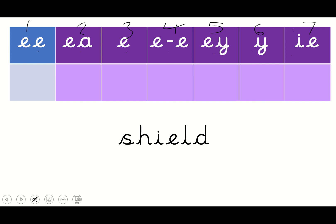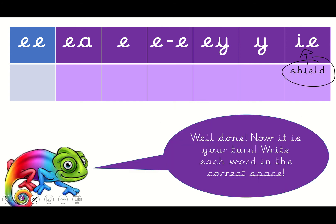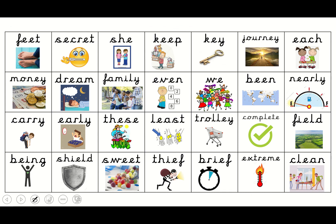Right then, let's look at this word here. Let's have a little blend, shall we? So what's this sound? Shh. Well done. What's this? Yeah, it's the E sound, isn't it? So we've got 'sh' — I-E-L-D — shield. So where does it go? Which E column does it go in? Well done — it goes there because it has the I-E. Now, write each word in the correct space. I've put the graphemes at the top for you, and you have all of these words to sort out.